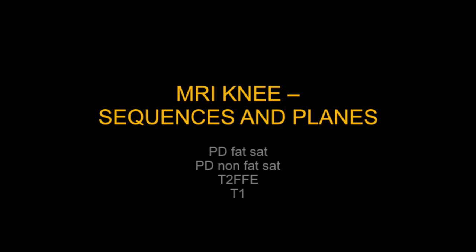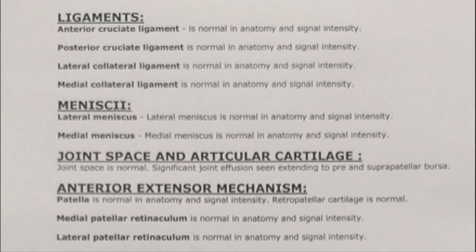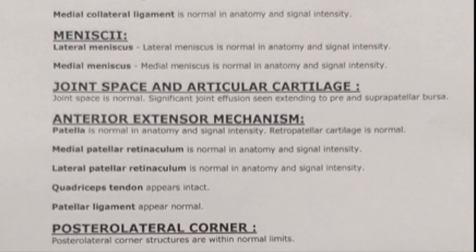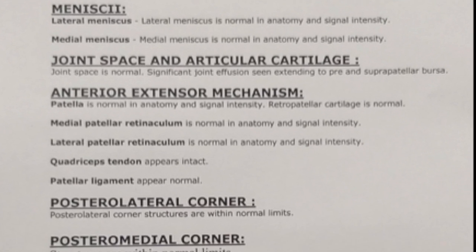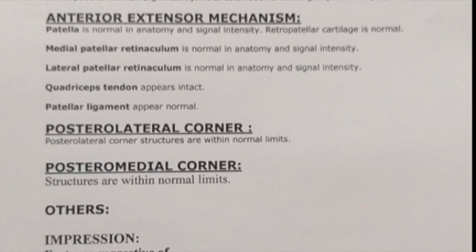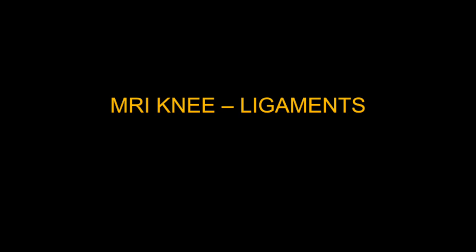The basic sequences that we need universally are proton density fat sat, non-fat sat, T2 FFE to look for blood products, and T1 to look for fracture lines. This is the format I follow step by step while reporting an MRI knee. Number one, I see the ligaments.